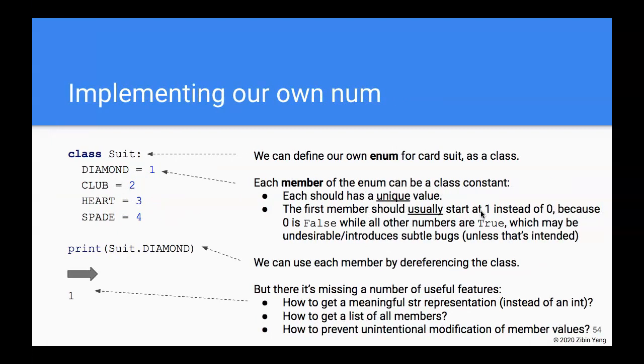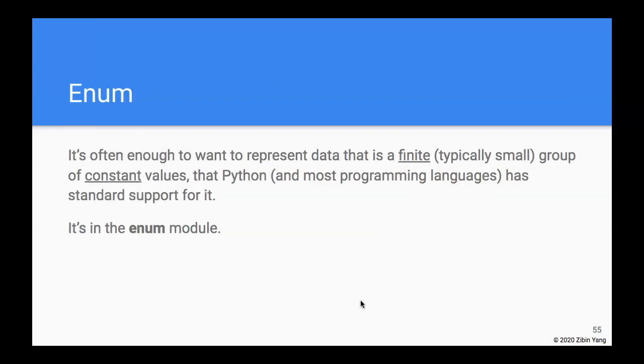As a matter of fact, we want to represent data that is a finite group of constant values so often that Python, as well as most other programming languages, actually has some sort of standard support for it. In Python, it is in what's called an enum module.